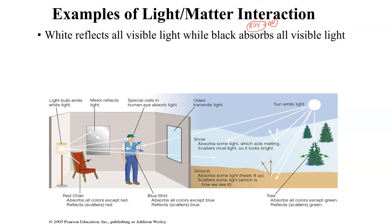White reflects all visible light while black absorbs all light. That's why you want to wear a white shirt on a hot day, not a black shirt. A white shirt reflects most of the colors of the spectrum, so you get very little heat from visible light hitting you — you still get UV, but not the visible light. Whereas with a black shirt, all those colors are absorbed in addition to UV, so you're going to feel a lot warmer. White won't make you completely cool, but it will make you cooler.